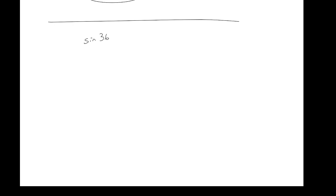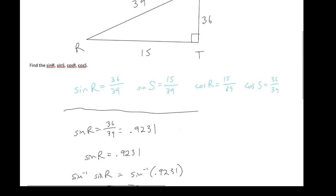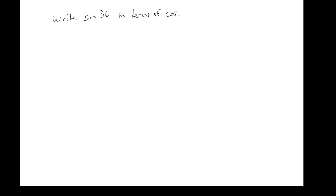Let's write the sine of 36 in terms of cosine. Remember: the sine of one angle equals the cosine of the complementary angle. So the complement of 36 is 90 minus 36, which is 54. Therefore, sine of 36 equals cosine of 54. That's your answer.